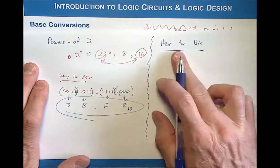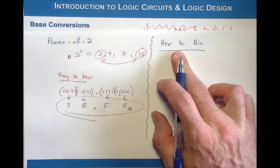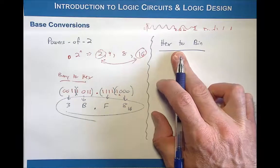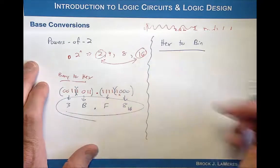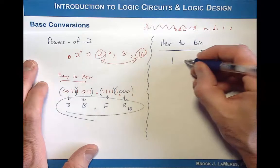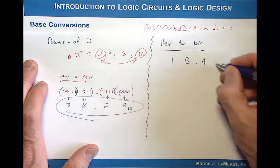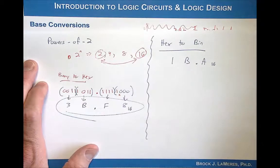What I do is I take the hex symbols and I replace them with 4 bits of binary and then just tabulate the number. So let's take a look at what if I started with a number such as 1B.A base 16 and I want to convert that into binary.